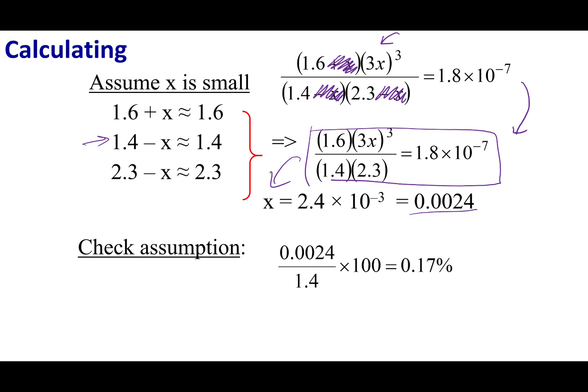You'll notice that this is a really small number. To verify this mathematically, we can check our assumption. Take this value and see what percentage it makes up of the addition or subtraction. Take your x value and see where it was subtracted from and check if it's a small portion of it. If I wanted to check if the 1.4 assumption was correct, 0.0024 divided by 1.4 times 100 is 0.17 percent. Your assumption is good so long as that x is less than five percent.